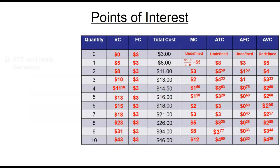What are some points of interest? One, the average fixed cost continually decreases. Why? The total fixed cost never changes and your quantity is continually increasing. So your average fixed cost will continually decrease.